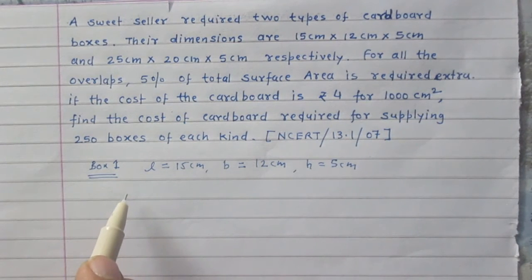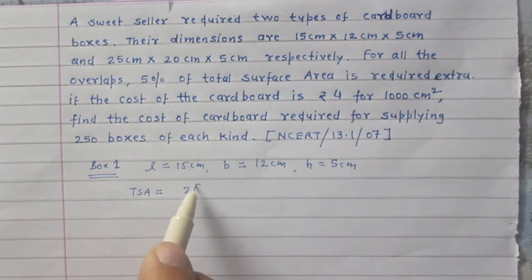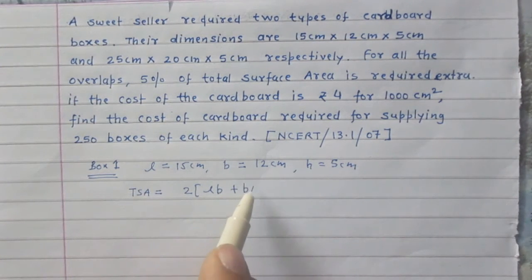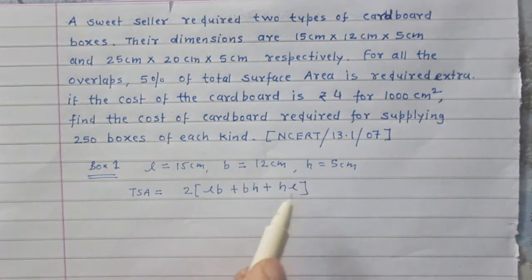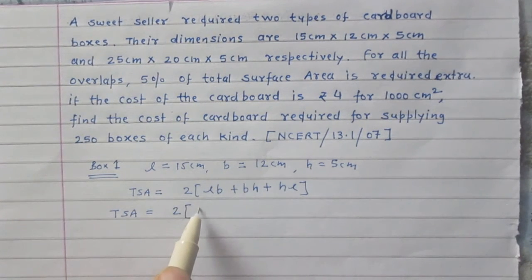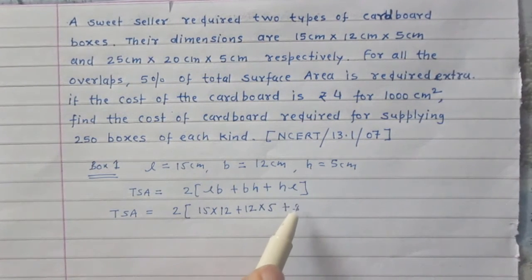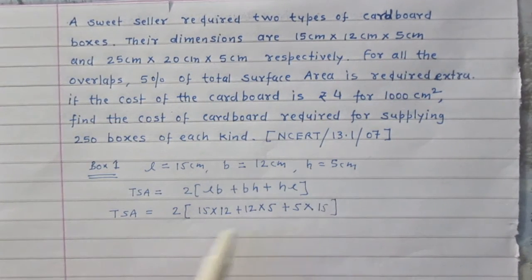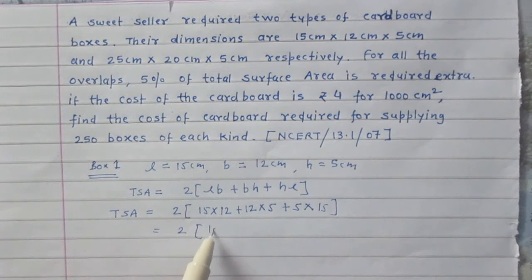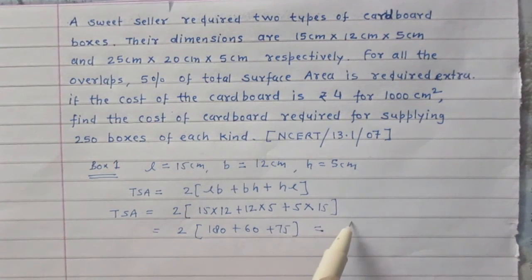We need to find the total surface area of box one. The total surface area of a cuboid is 2(LB + BH + HL). So the total surface area of the first kind is 2 × (15×12 + 12×5 + 5×15), which is 2 × (180 + 60 + 75), giving us 630 cm².